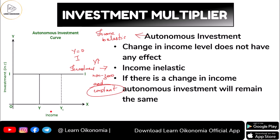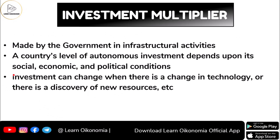When you measure income along the x-axis and investment along the y-axis, you can see that at zero income, investment is a certain amount. Even when income rises from Y to Y1, investment remains the same — it stays constant. This is what we mean by autonomous investment remaining constant.